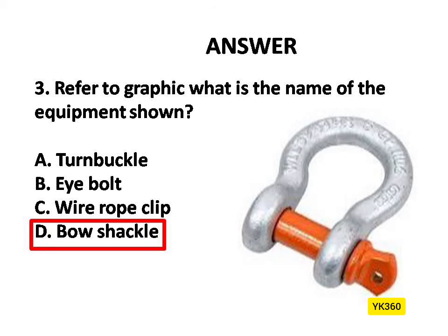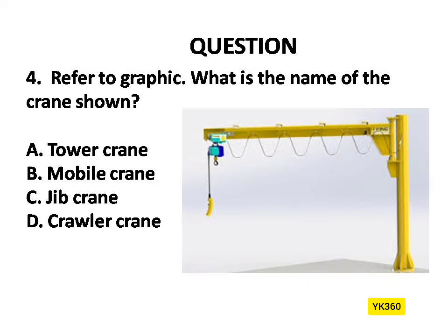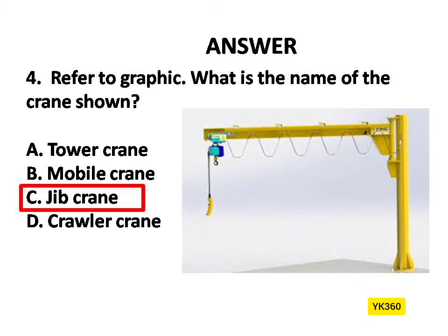Question Number 4. Refer to graphic — what is the name of the crane shown? Options are: A. Tower Crane, B. Mobile Crane, C. Jib Crane, D. Crawler Crane. Answer is Option C: Jib Crane.